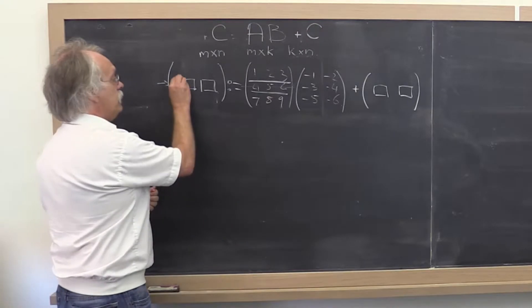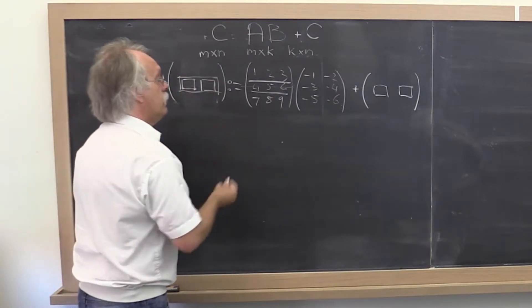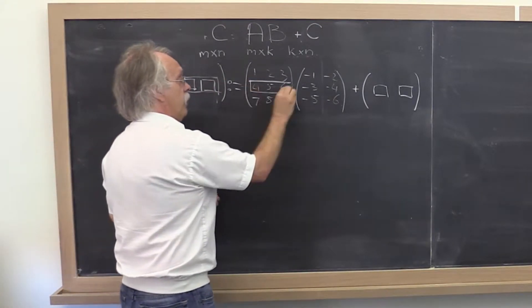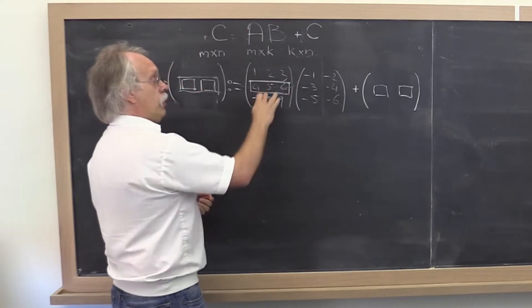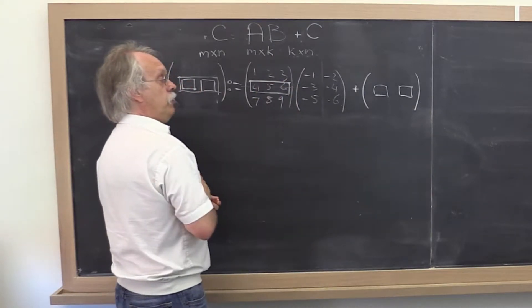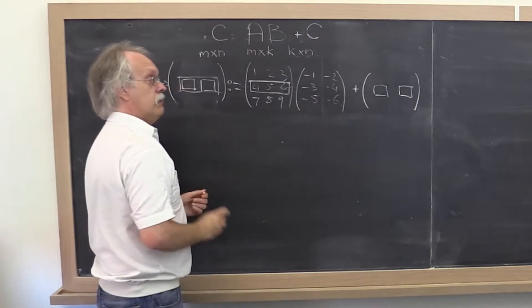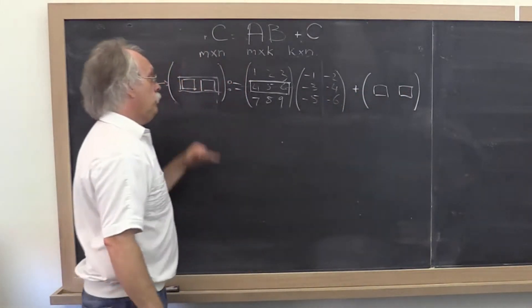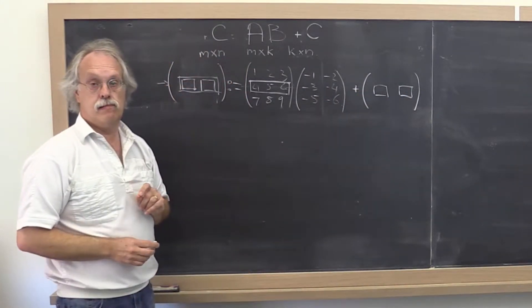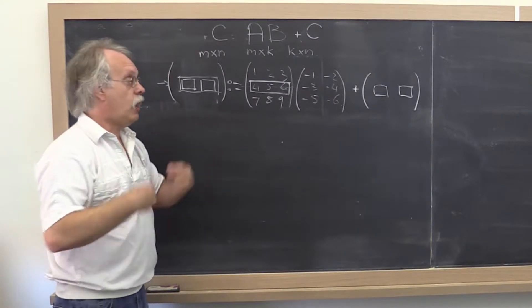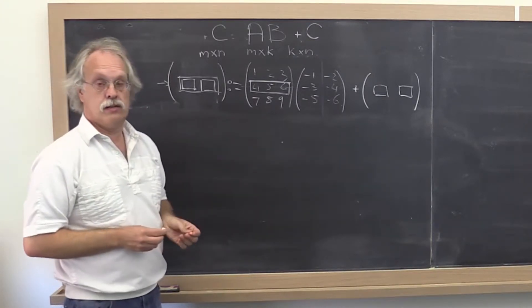So we can think of this row as computed by computing the product of the corresponding row of A with the entire matrix B, adding the result then to the row of C. So how can we say that more generally?